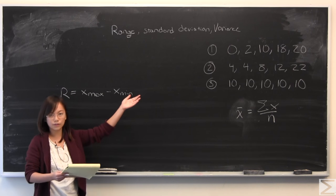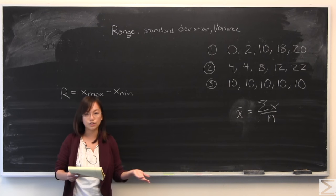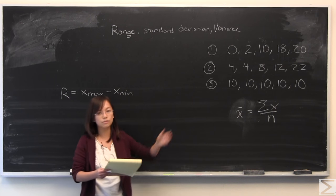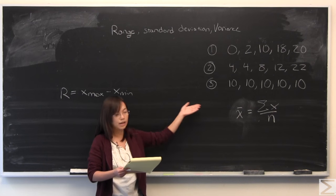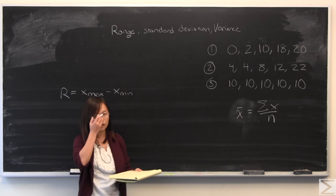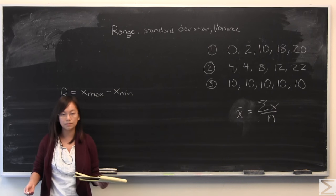As you can see, for the first one, the maximum value is 20, minimum is 0, so your range is 20. Second one, 22 minus 4 is 18. Third one, 10 minus 10 is 0. This is a very quick and easy way to calculate some level of variation.